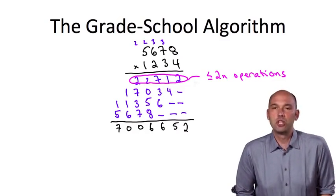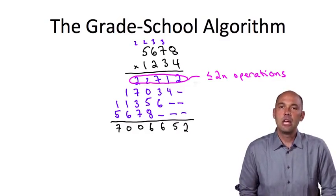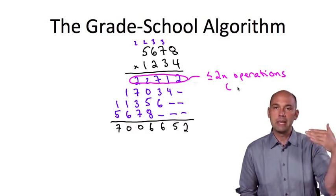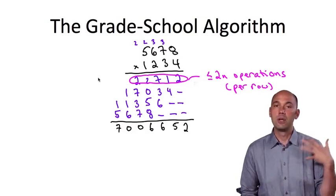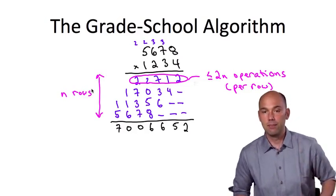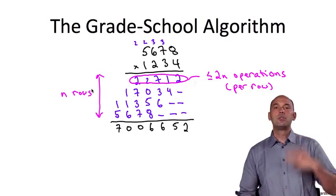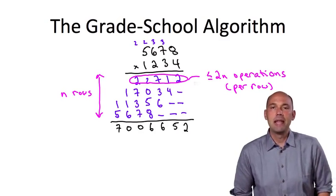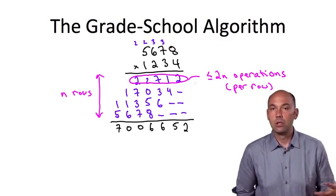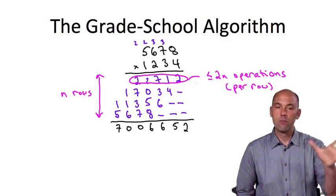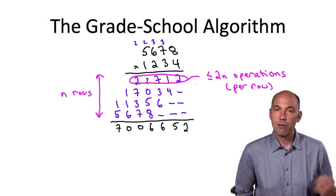And if you think about it, there's nothing special about the first partial product. The same argument says that we need at most 2n operations to form each of the partial products, of which there are again n, one for each digit of the second number. Well, if we need at most 2n operations to compute each partial product, and we have n partial products, that's a total of at most 2n squared operations to form all of these blue numbers, all of the partial products.